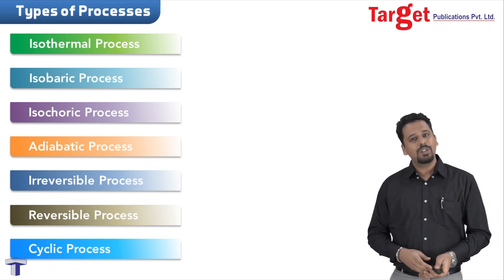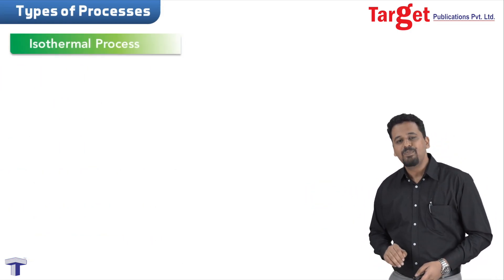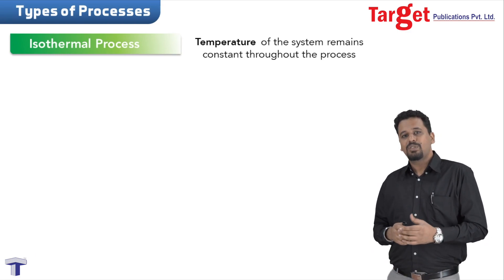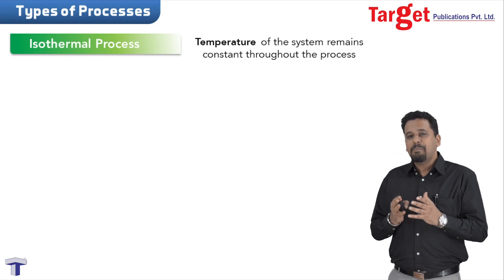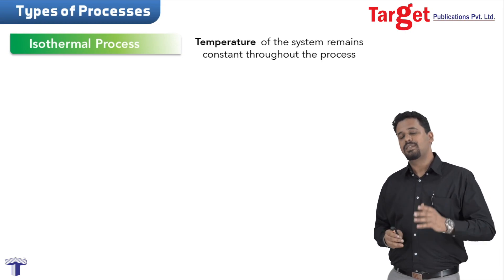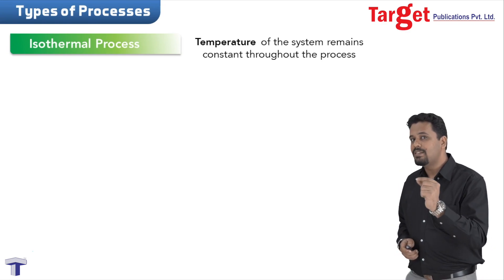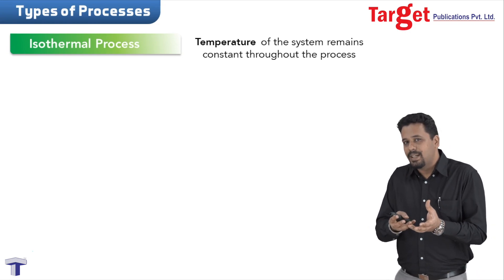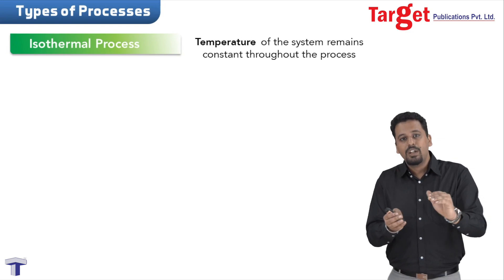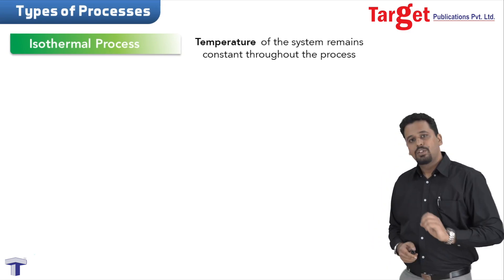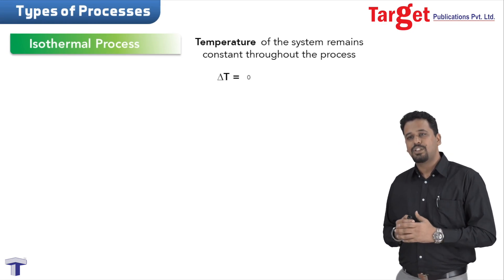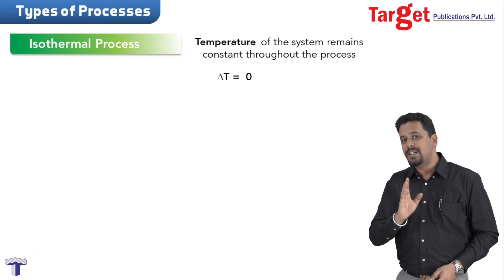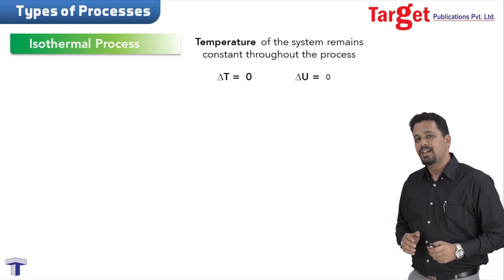Let's start with the isothermal process. As the name suggests, isothermal process is that process where the temperature of the system remains constant throughout. Temperature does not change, so delta T — that is, change in temperature — is zero. We can also say that the change in internal energy, delta U, is also zero.